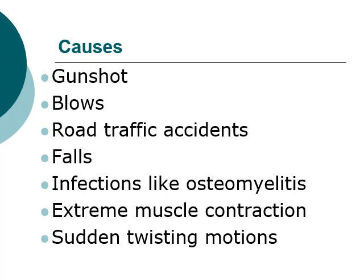What are the causes of a fracture? A fracture can occur because of gunshot, blows, road traffic accidents, infections like osteomyelitis — which simply means inflammation of the bone. We also have extreme muscle contraction and sudden twisting motions, where you twist your body or your joint in such a way that the bone is broken.